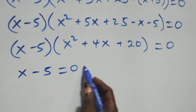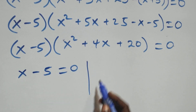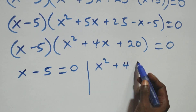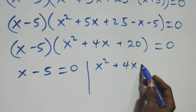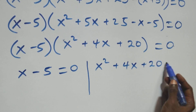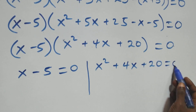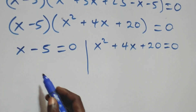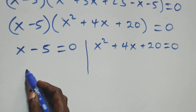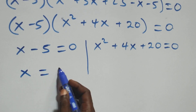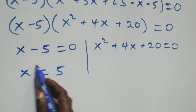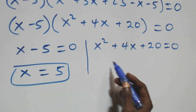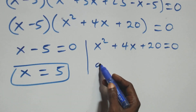From here we have two possible cases. The first one: x minus 5 equals zero, or we have x squared plus 4x plus 20 equals zero. From the first case, x equals 5, which is a real solution.